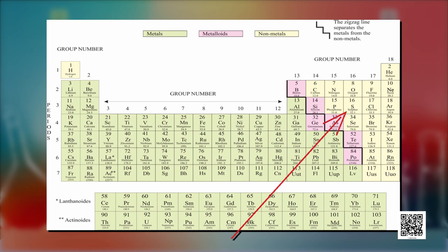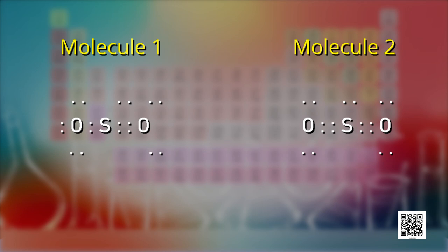Often you have more than one possible Lewis dot structure, and this happens with elements like sulfur, which is in the third period. Sulfur and phosphorus can have more than 8 electrons around them. You can see two structures of sulfur dioxide on screen. Which one is more stable — the one with the lowest energy — but how can you tell which has the lowest energy?